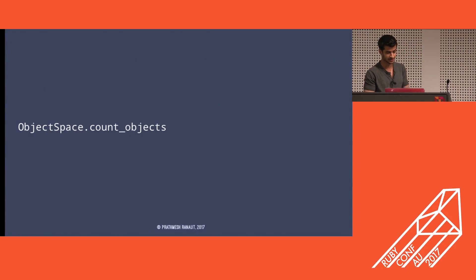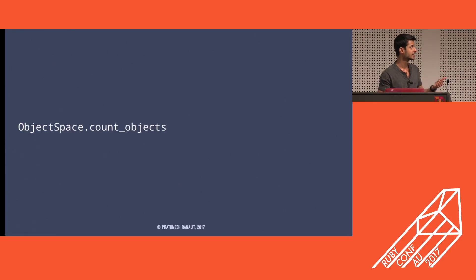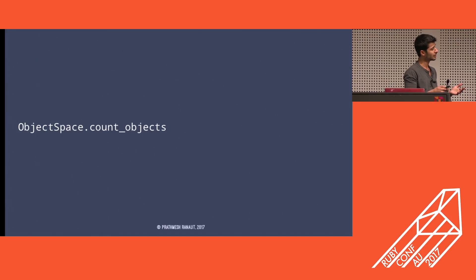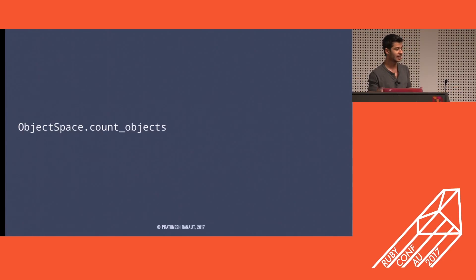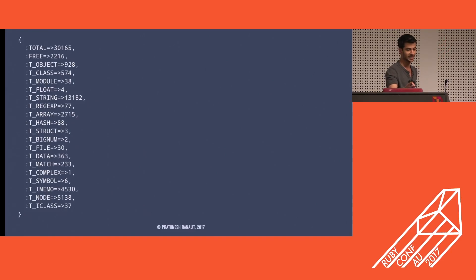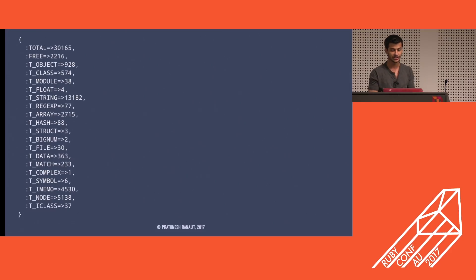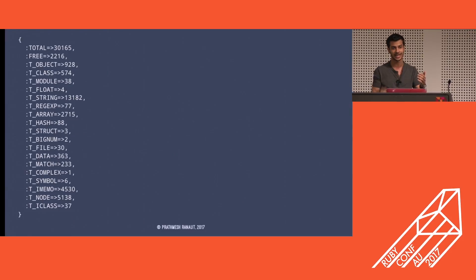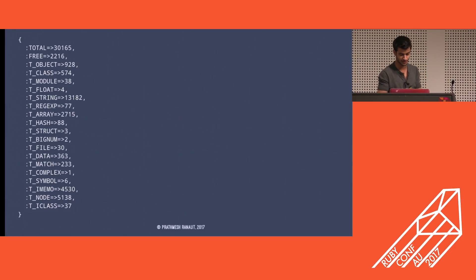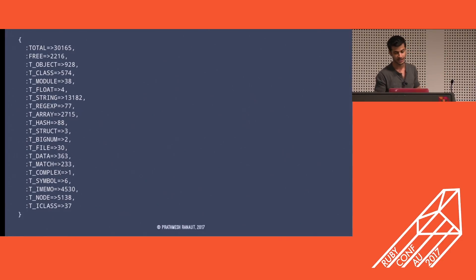Next up is ObjectSpace count_objects. The tools I showed before are for CPU optimization, but this tool is for memory optimization. It lets you see the number of objects being created before and after you run a particular piece of code. You can disable the garbage collector before running this, dump the data, run your code, and then dump the data again to actually see the spike in certain objects or data types being generated. This can really help you in memory optimization.